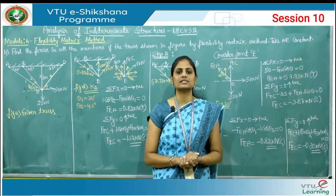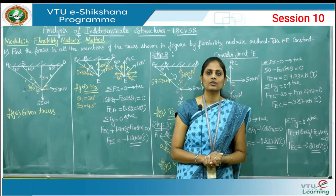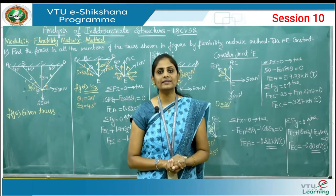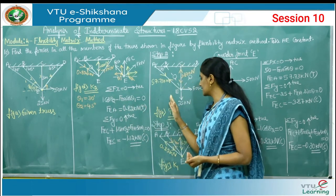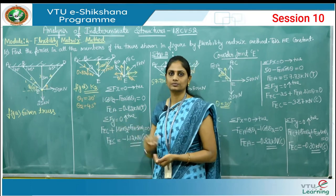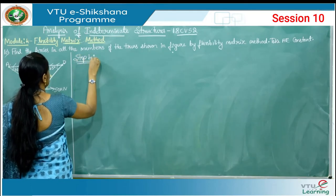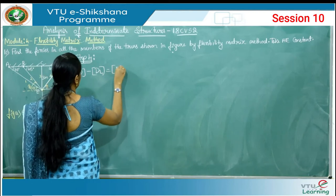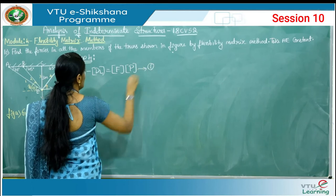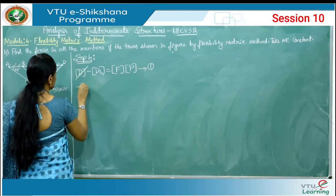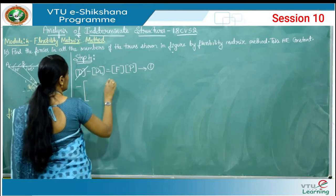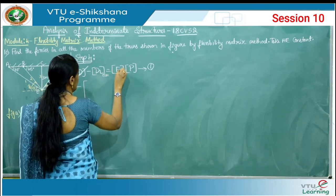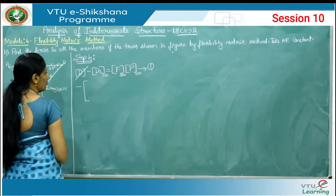In step number 4, using the flexibility matrix equation, we find the unknown forces — member force BE and member force DE. The flexibility matrix relation is given by D minus DL equals F times P, as equation 1. Since D equals 0, and we have two redundants, the matrix order is 2x1 for DL, 2x2 for F (always a square matrix), and 2x1 for P. This gives the system: [D1L, D2L] equals [[F11, F12],[F21, F22]] times [P1, P2], called equation 2.